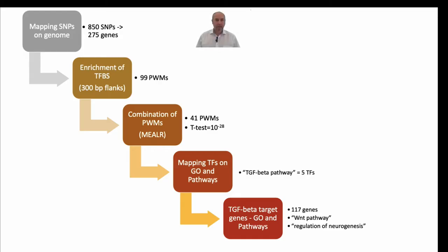We applied the following algorithm. First, we took the SNPs and mapped them on the genome and found 275 genes where those SNPs are located in exons, in introns, in 3' regions of those genes and in 5' regions.